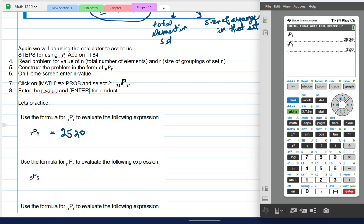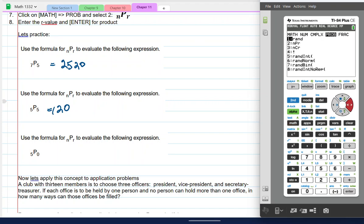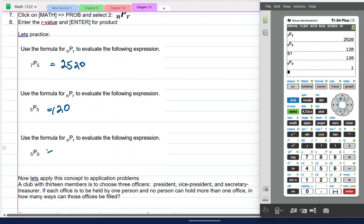All right. So what happens if I have a zero? If I don't use any of the elements? Well, we only have one way of doing none. And we're going to prove it on this one. Ready, five, math, PROB, and we're doing number two, and we're entering zero. And I get one. There's only one way of nothing.